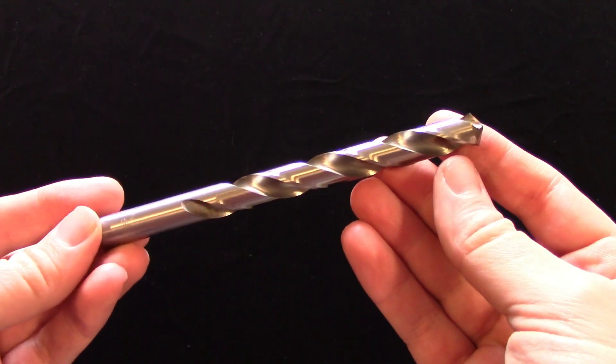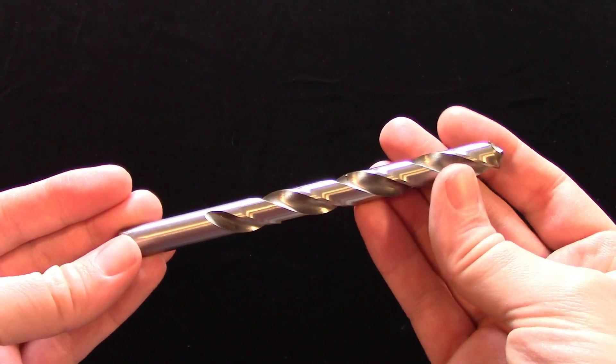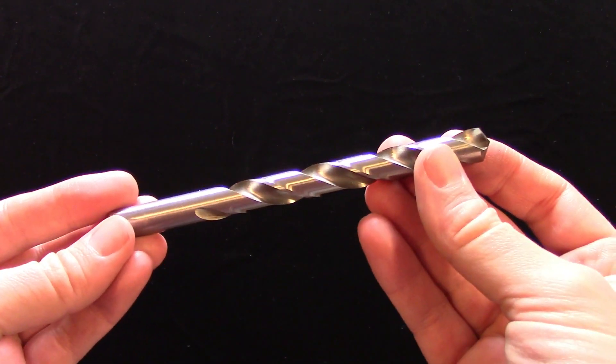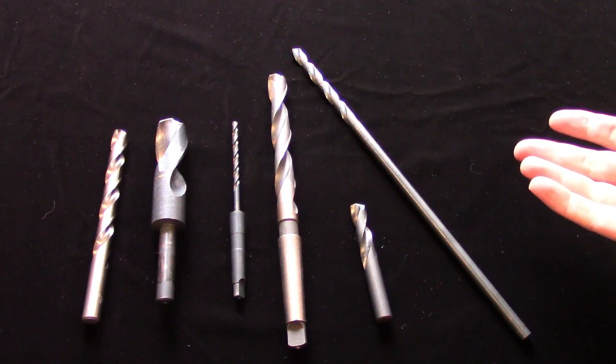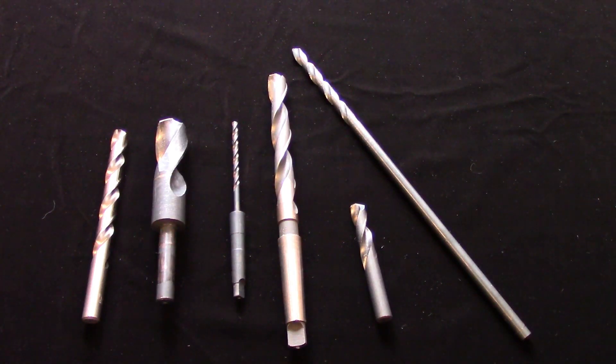When it comes to making a hole in a part, the first tool most machinists reach for is a drill bit. Drill bits come in a bewildering array of shapes and sizes, and I'm just going to cover the most common varieties so you can make informed decisions when choosing your tooling.